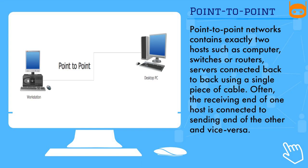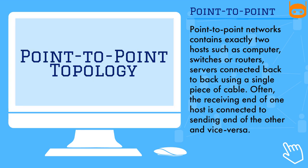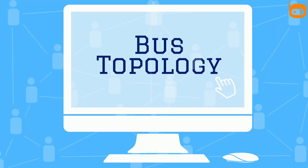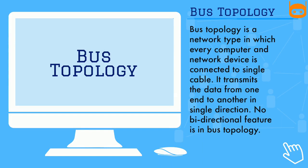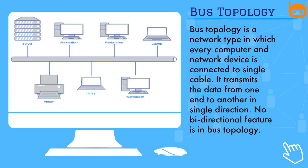Our first topology is point-to-point. Point-to-point networks contain exactly two hosts — such as computers, switches, routers, or servers — connected back-to-back using a single piece of cable. Often the receiving end of one host is connected to the sending end of the other, and vice versa.